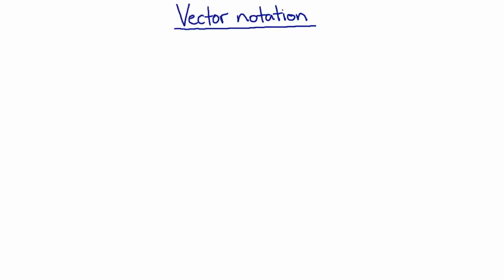Vector equations have all sorts of rules, just like normal equations do. Let's look at one of the first vector equations we've seen — the definition of velocity. Velocity, which is a vector, is equal to the change in position over a change in time. Now that looks like just a number equals a number divided by another number, but we know that both velocity and position have a direction.